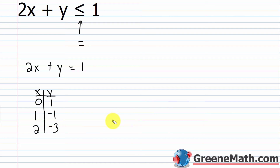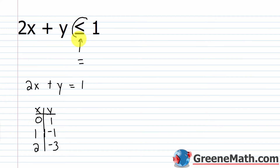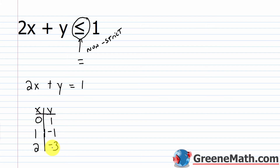Let's plot those ordered pairs and draw a line — this line is going to be our boundary line. We have a non-strict inequality here, so the boundary line is part of the solution. We want a solid line.